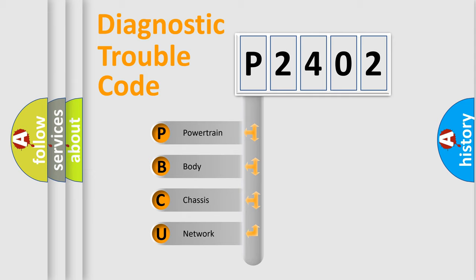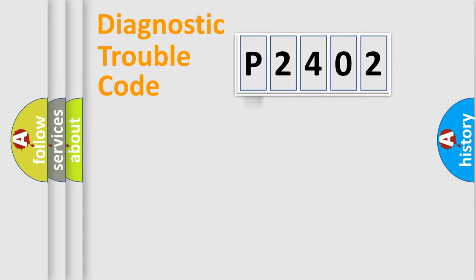We divide the electric system of automobile into four basic units: Powertrain, Body, Chassis, and Network. This distribution is defined in the first character code.